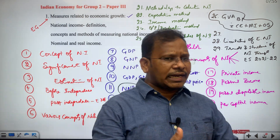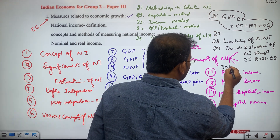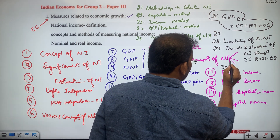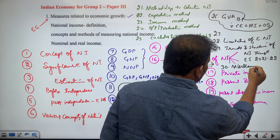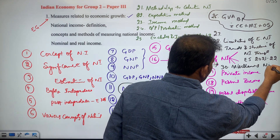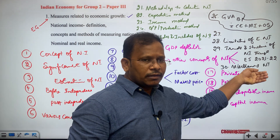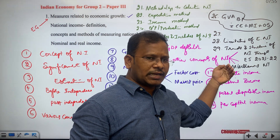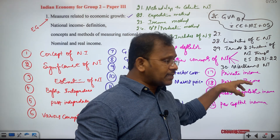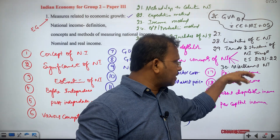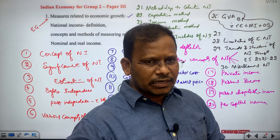The 30th subtopic covers miscellaneous items regarding national income — whatever is happening in national income as reported in newspapers, and present trends will also be discussed as part of the miscellaneous items of national income.